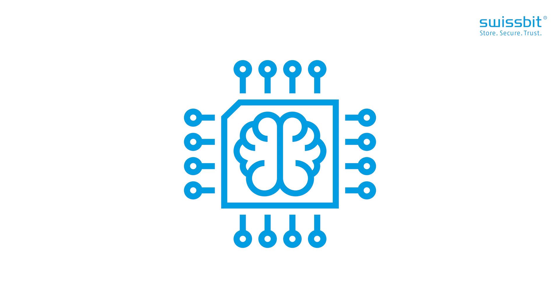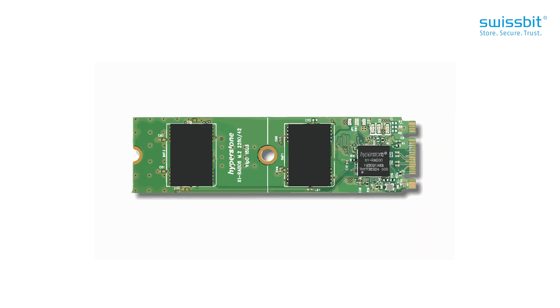The role of the flash controller is to ensure data received from a host is reliably sent to the NAND flash memory and can be efficiently retrieved later. It does this through a range of features and processes. To understand the flash controller, one must understand how data travels through it.